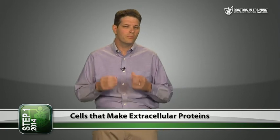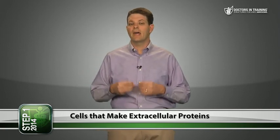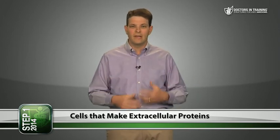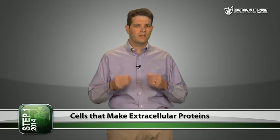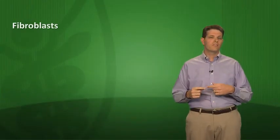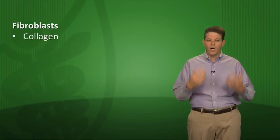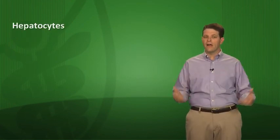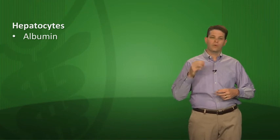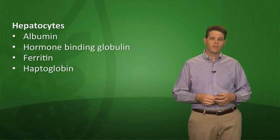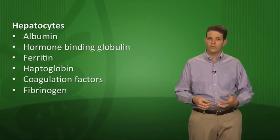Some cells are notable for making extracellular proteins. Fibroblasts make fibrous support connective tissue proteins like collagen, fibrillin, and elastin. Hepatocytes make plasma proteins including albumin, transport proteins like hormone-binding globulins, ferritin, haptoglobin, coagulation factors, and fibrinogen — making the liver a hugely important protein factory.